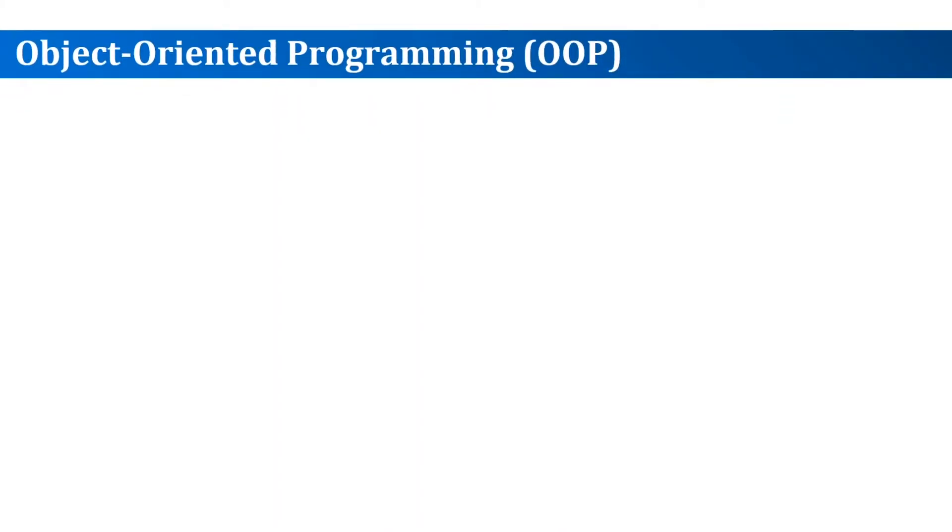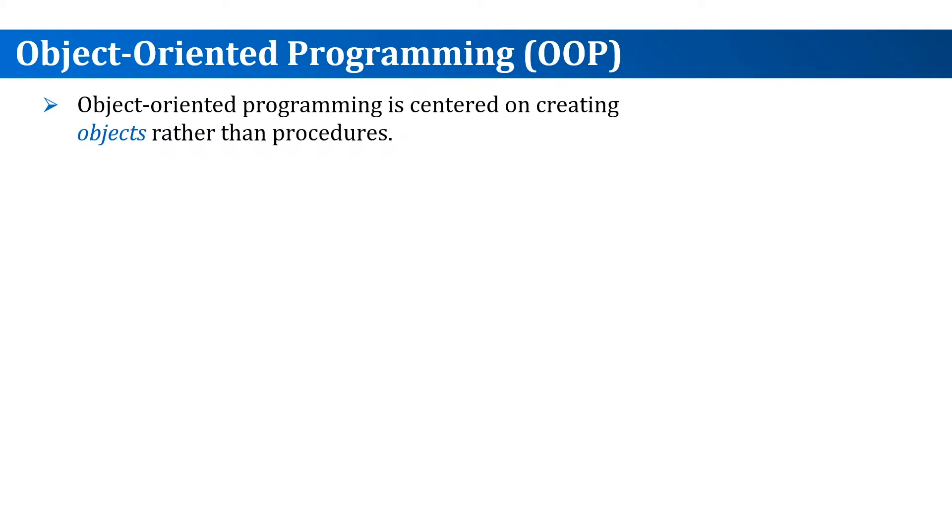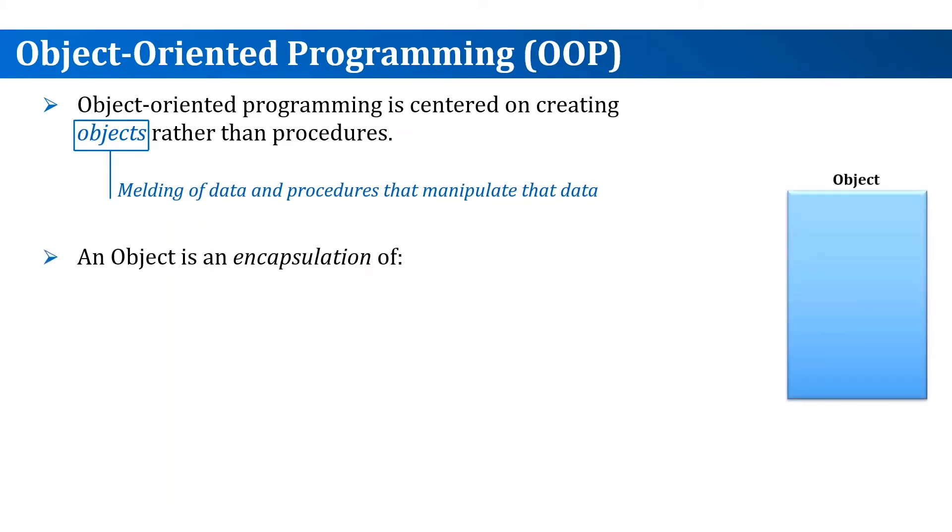So how does object-oriented programming work? From its name, an object is the building block of the OOP paradigm. The object is a melding of data and the procedures that operate on this data. This is how OOP brings the data and the procedures together: by encapsulating them in an object.